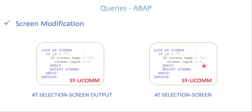The reason is there is a variable to capture user commands — SYSSC_UCOMM. This variable is filled only in AT SELECTION-SCREEN, not in AT SELECTION-SCREEN OUTPUT. So if you want to write screen modifications based on the user command, you need some variables to capture which user command was selected.